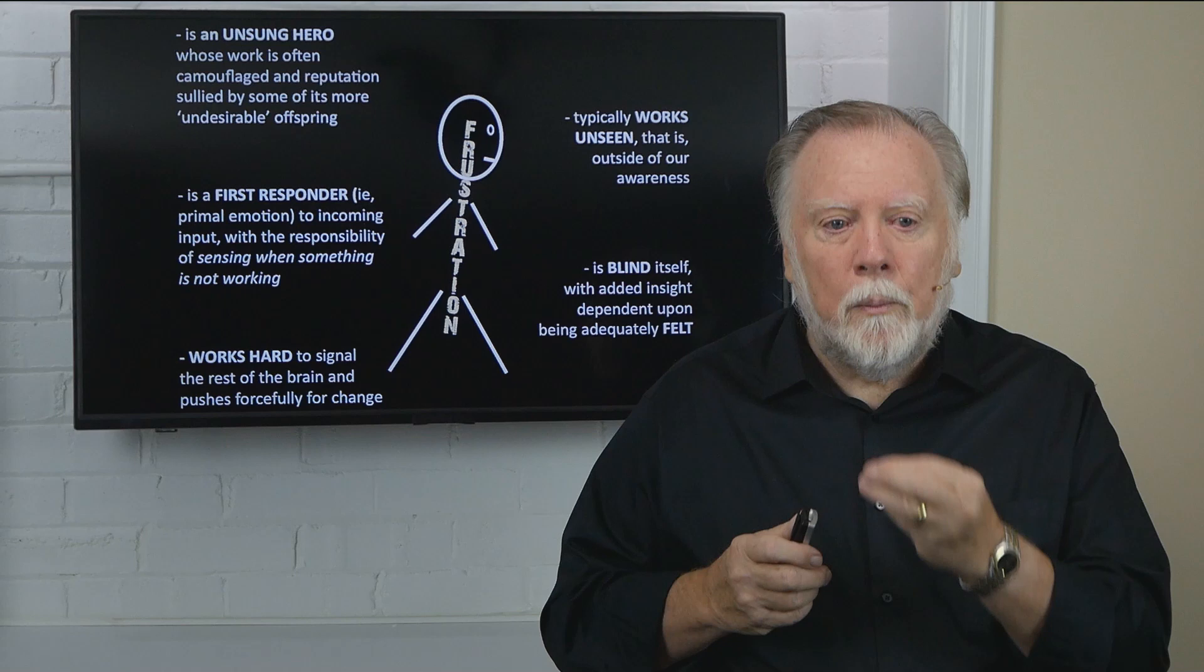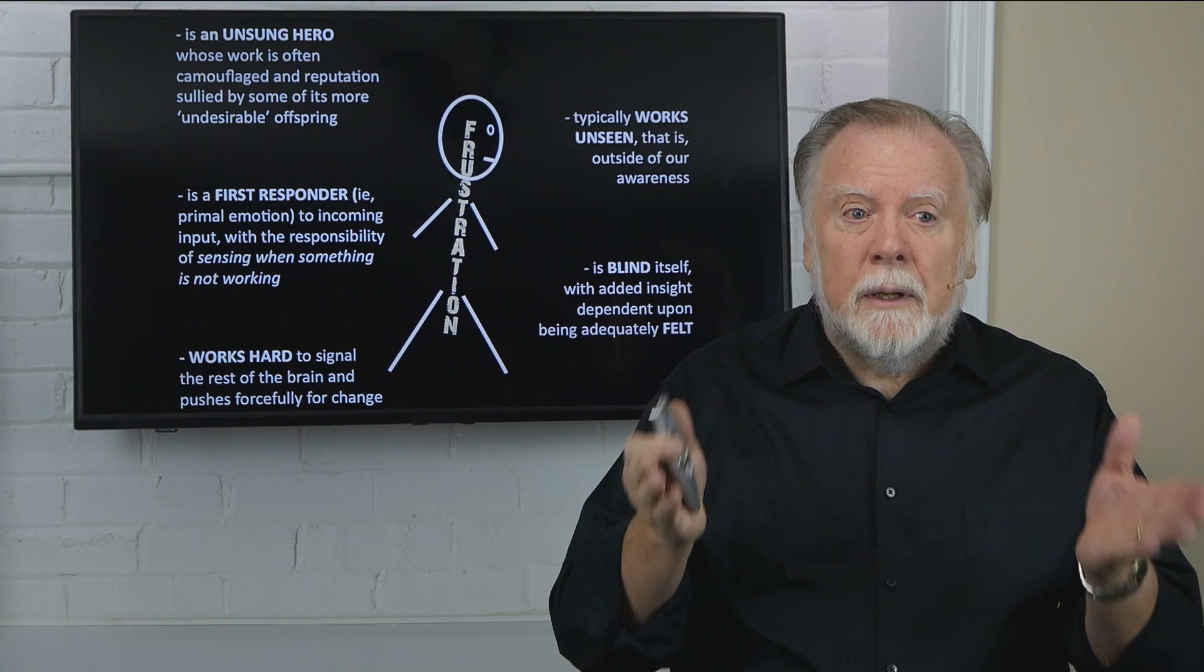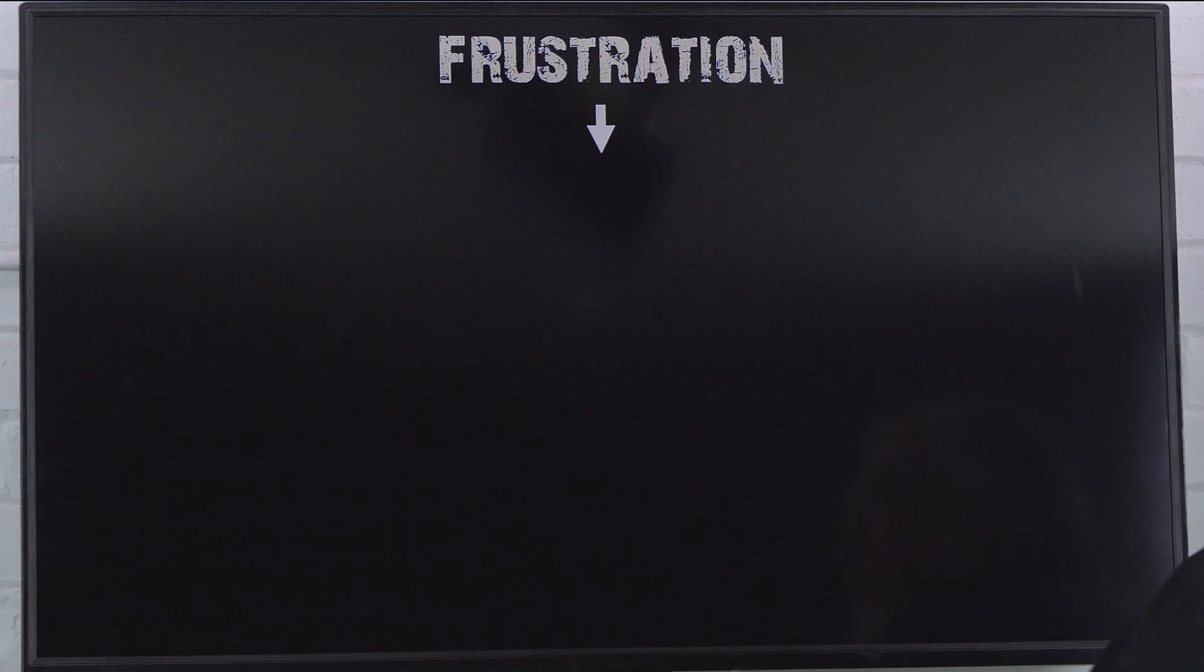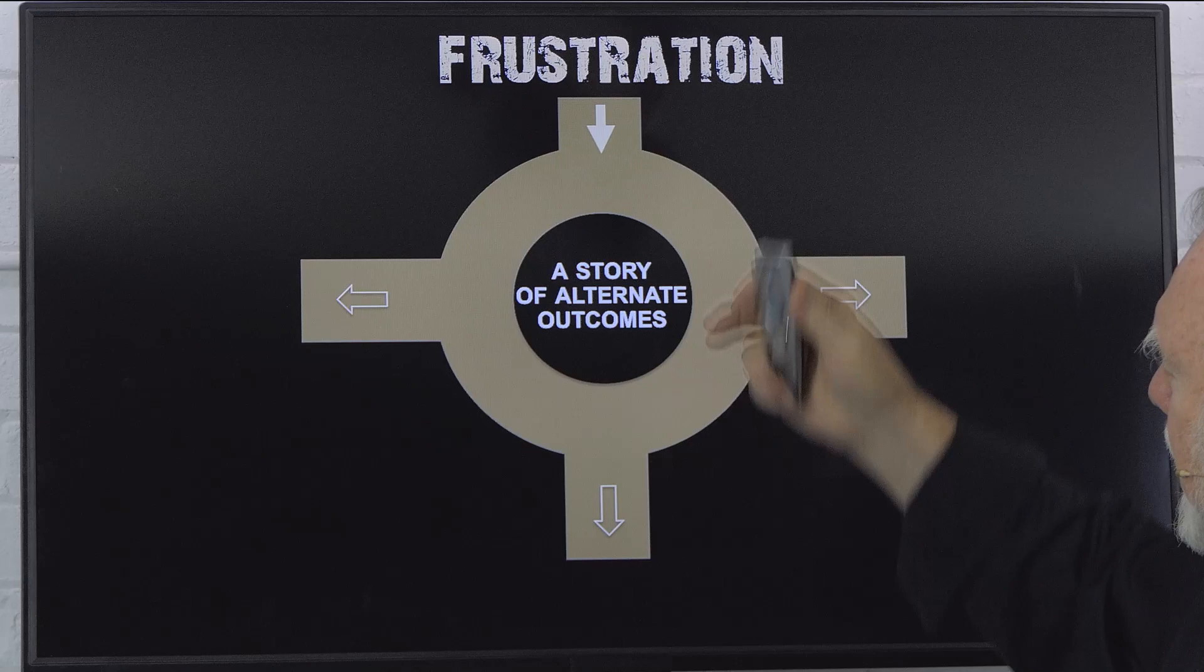Lastly but not least, frustration can have multiple outcomes depending upon the situation and the circumstances. Hence, the analogy of the traffic circle. So, frustration can have multiple outcomes. In this case, three possible outcomes. In this case, the traffic is going to go to the right.